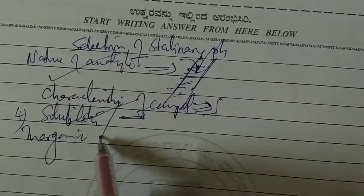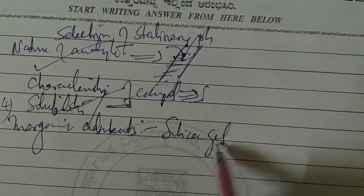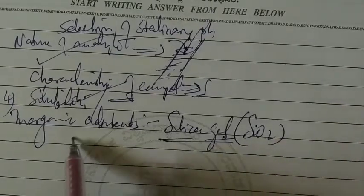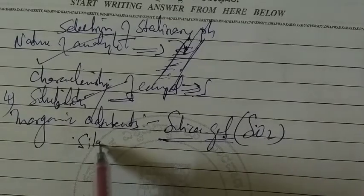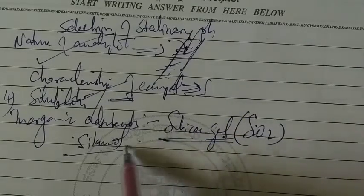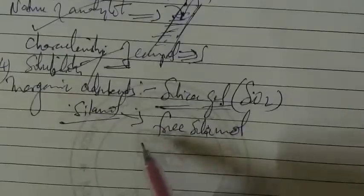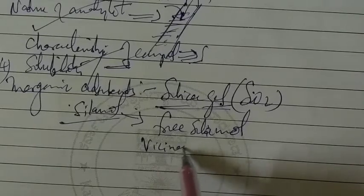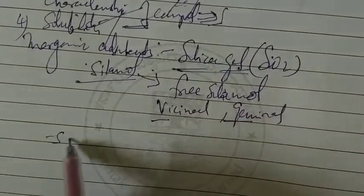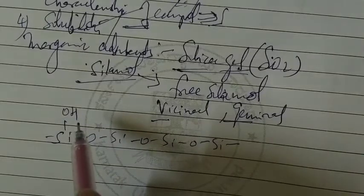Some inorganic adsorbents used in TLC include silica gel — the most important one, denoted as SiO₂. It is named due to the presence of silanol groups. It may be acidic in nature. There are three forms of silanol: free silanol, vicinal, and geminal.